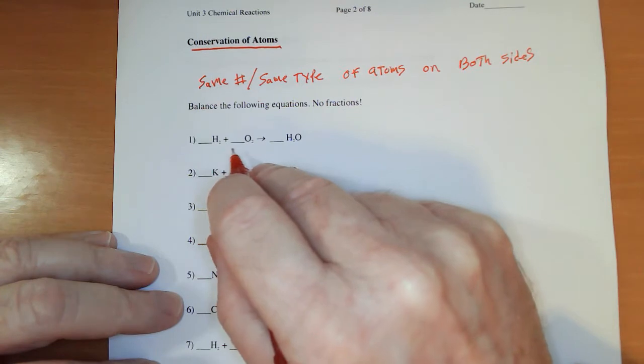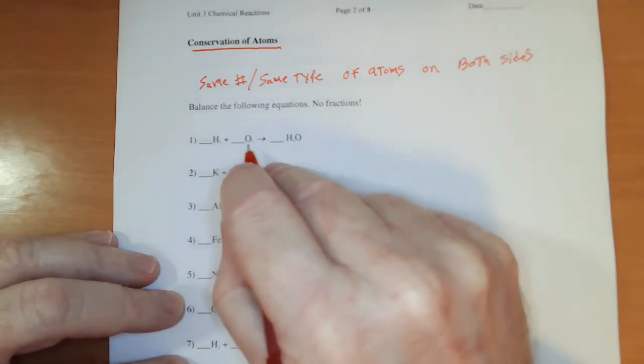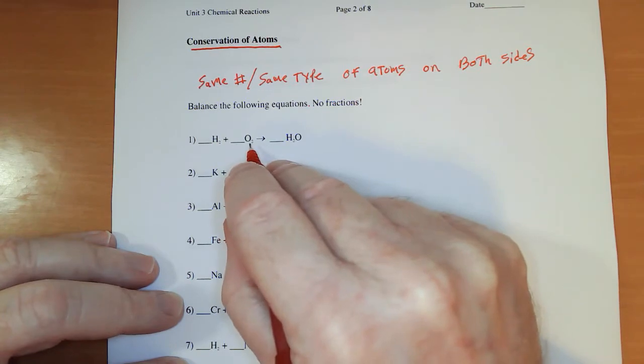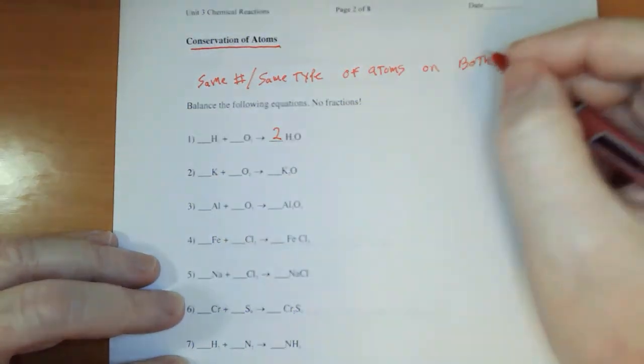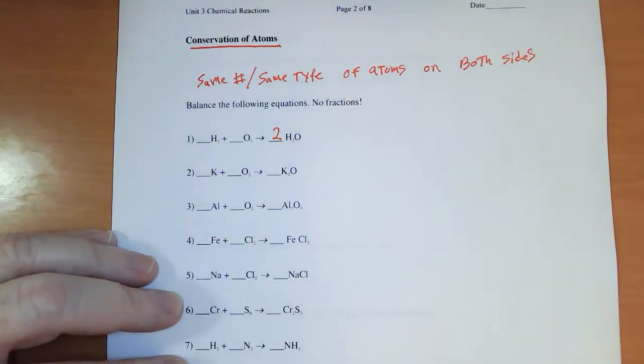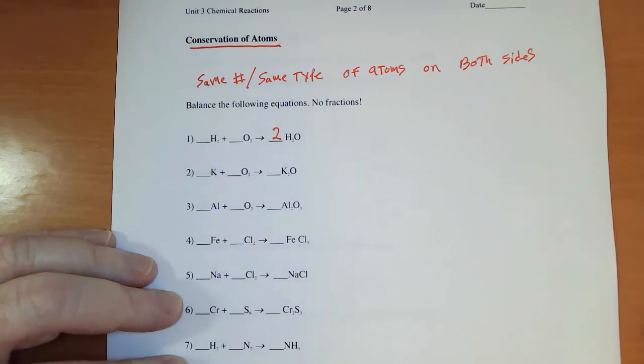So let's look at this first one. H2 plus O2 gives us H2O. I immediately notice that this is O2 but there's two oxygens and only one over here. So I need to put a coefficient up front. I can't add a subscript. That would be changing a chemical formula. That would change water into hydrogen peroxide. Not a cool thing, so we're going to avoid that.